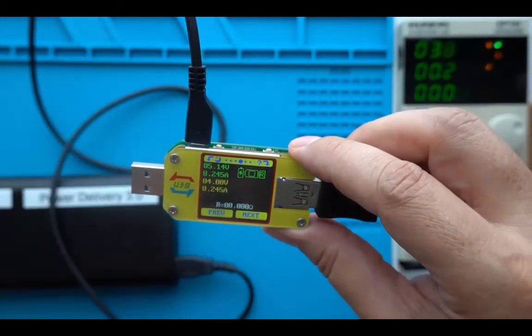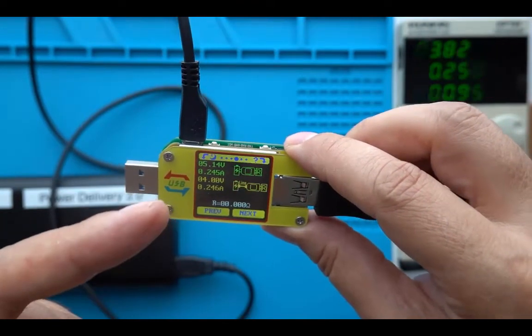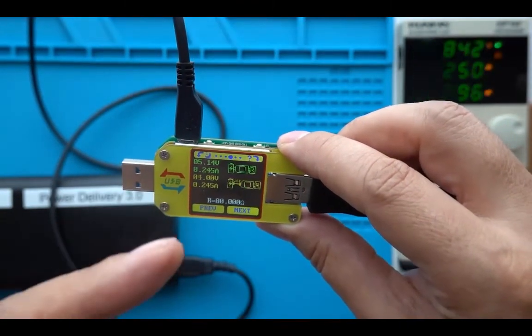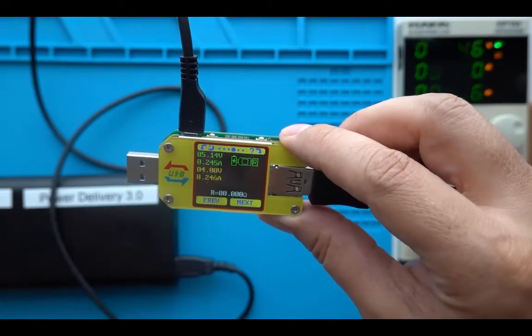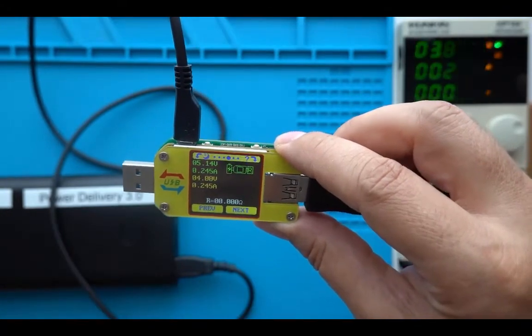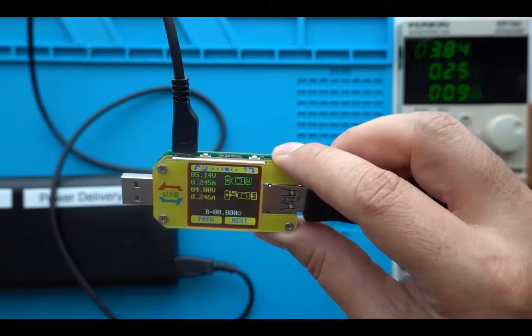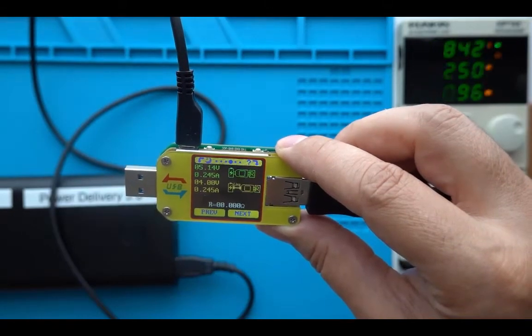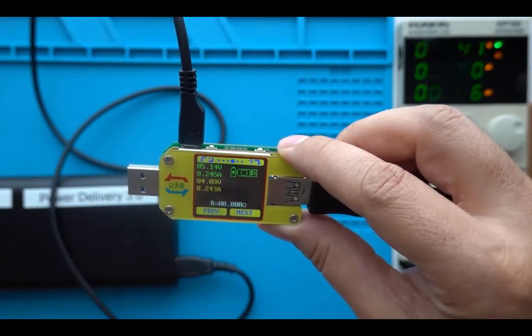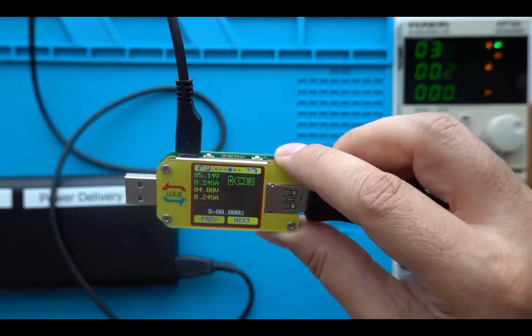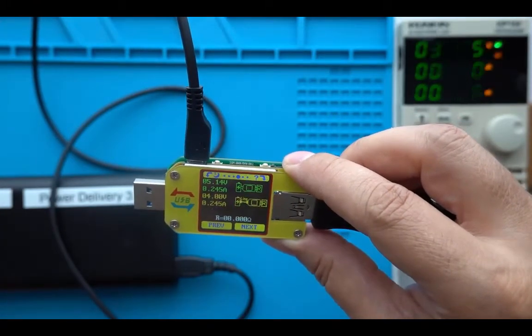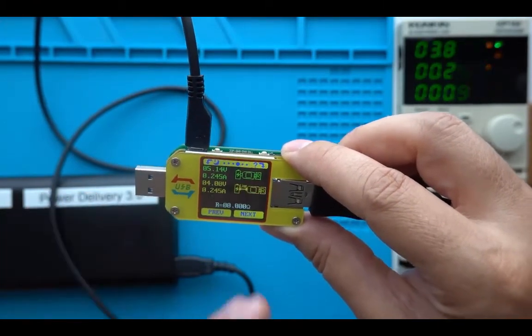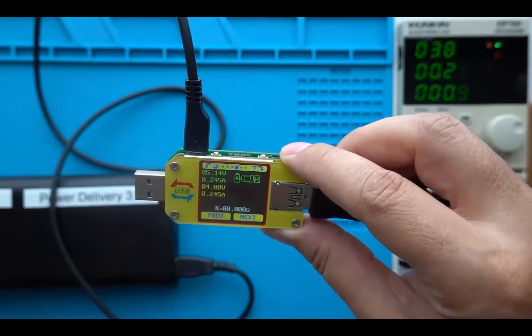And now you can see here quite a difference. We have 5.14 volts without the cable and 4 volts with the cable, and the current drawn is about constant, 245, that's the same. So that's a huge difference. We have more than a volt of drop on this cable just with 250 milliamps.